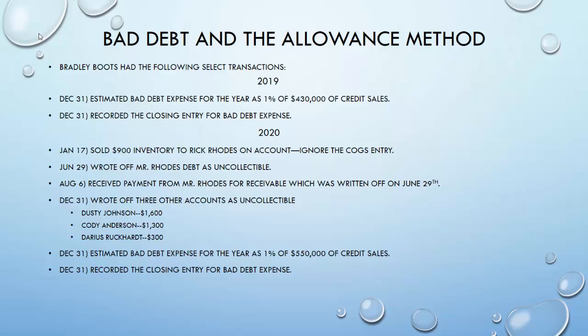Bradley Boots had the following transactions: at the end of 2019 on December 31st, they estimated bad debt expense at 1% of the $430,000 of credit sales they did that year. On that same date they're going to close the entry for bad debt expense. Then during 2020, on January 17th they'll sell $900 of inventory to a customer named Rick Rhodes. On June 29th they'll deem that receivable uncollectible.